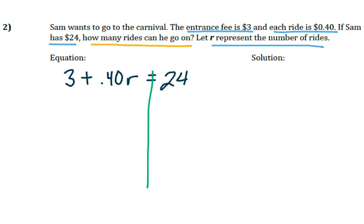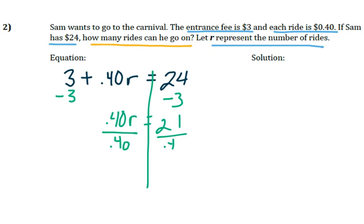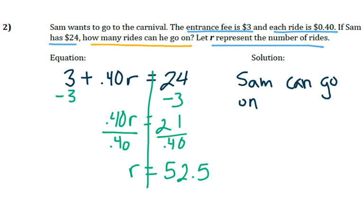We're going to do the opposite of what's happening to our variable R. We're going to start by subtracting 3 from both sides of the equation, which leaves us with 40 cents times R equals 21. Then, since we're multiplying 40 cents times R, we're going to divide by 40 cents, which results in R being equal to 52.5. So Sam can go on 52 rides. Notice the difference: we found R to be 52.5, but he can't go on half of a ride, so our answer is that Sam can go on 52 rides.